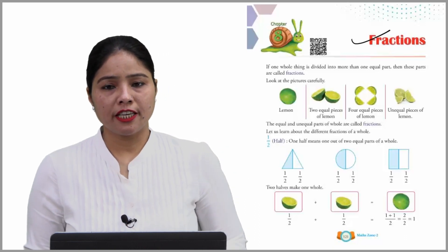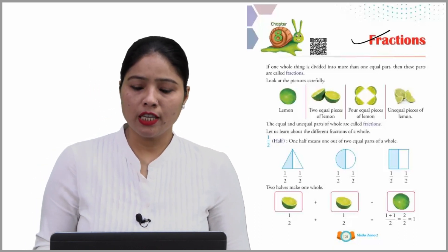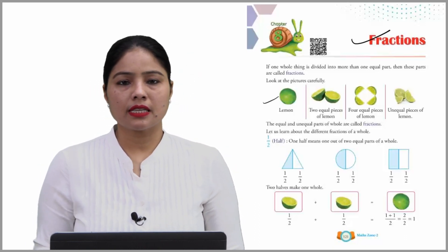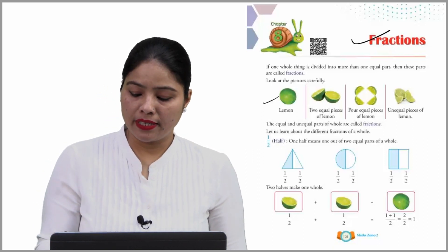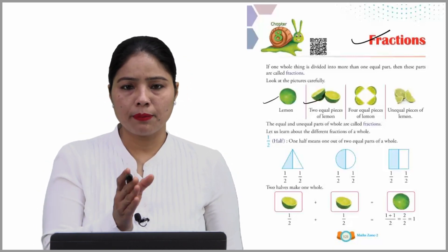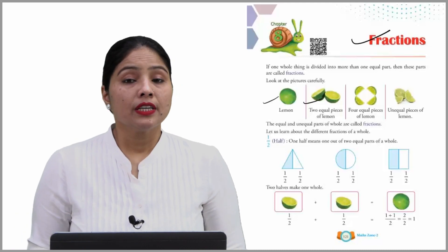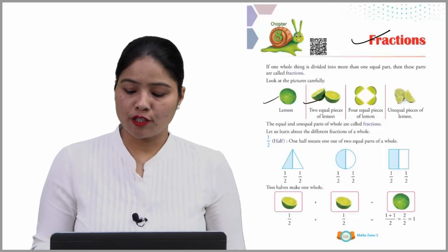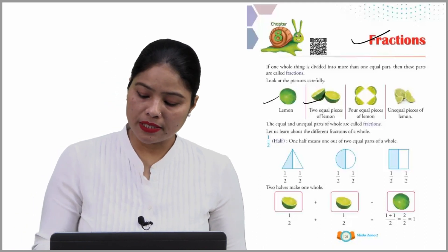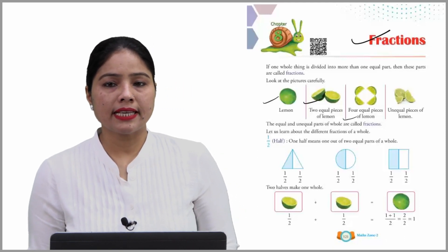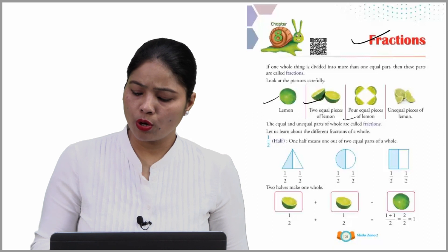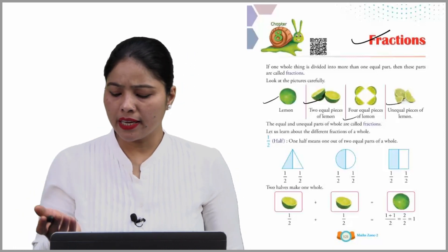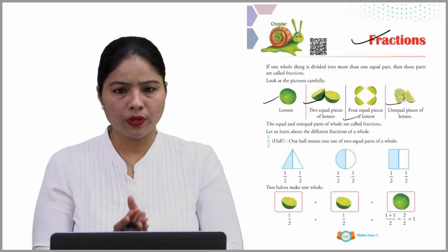Look at the pictures carefully. So, this is a lemon — this is complete. Two equal pieces of lemon — ये इसके बराबर बराबर हिस्से कर दिये हैं. Now, four equal pieces of lemon — अब इसके four बराबर बराबर parts हैं. And last one is unequal piece of lemon — ये unequal है, मतलब एक छोटा है, एक बड़ा है, थोड़ा एक किसी और से बड़ा है.